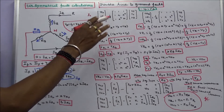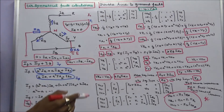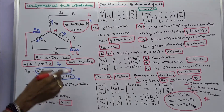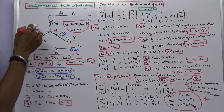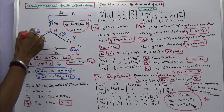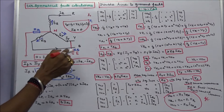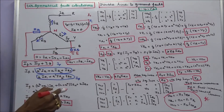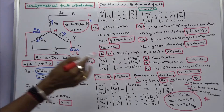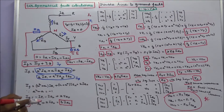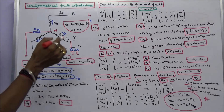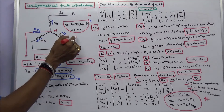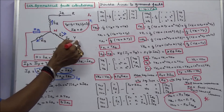This class we discuss about double line to ground fault including the neutral impedance Zn and fault impedance Zf. Zs is the source impedance. The fault involves lines Y and B.